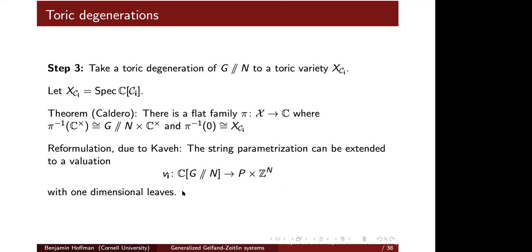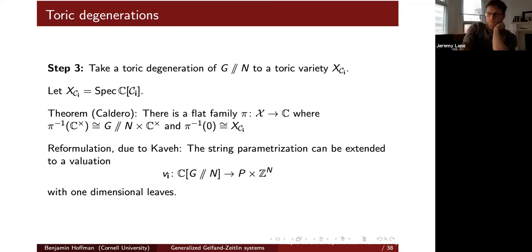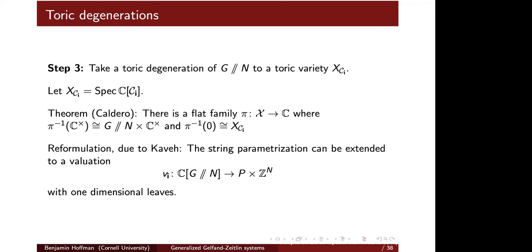Having a valuation with one-dimensional leaves means that the quotient space A_{≤k} / A_{<k} has dimension zero or one for each k. There's a theorem of Caldero from the 90s, with much subsequent work on toric degenerations, providing a machine: given a valuation with one-dimensional leaves, there is a toric degeneration.